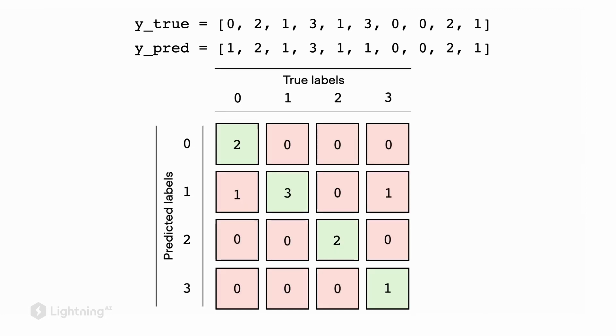So the diagonal of this matrix shows all the correct predictions. So the times the predicted label 0 matches the true label 0 and the predicted label 1 matches the true label 1 and so forth. And the off-diagonals are all the different ways that the model can make an error. Sometimes it's very useful to visualize this matrix to see which particular training examples or labels are challenging for a model.